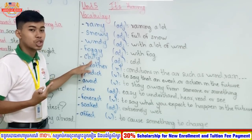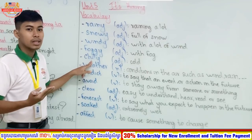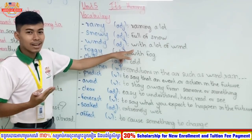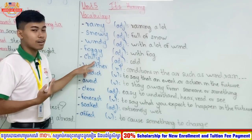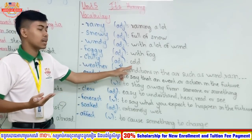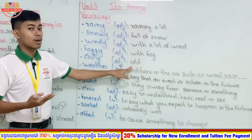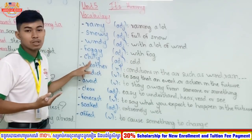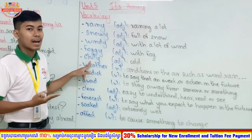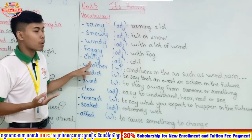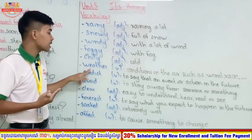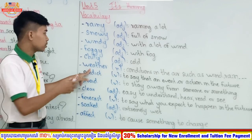The next word is 'chilly.' When there is a lot of wind, you will feel chilly. We can say 'it's chilly today,' which means it is cold because there is a lot of wind. Spelling: C-H-I-L-L-Y. Chilly means cold, a lot of wind.